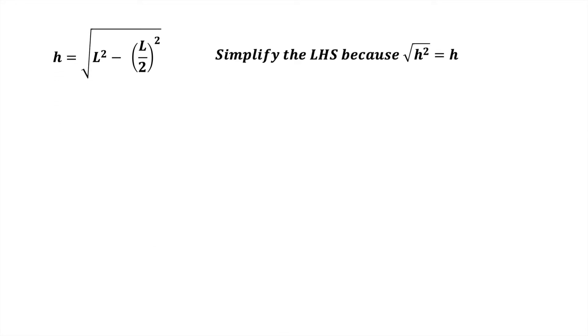We now have an expression for h which is the square root of L squared minus L divided by 2 all squared. We now proceed to simplify this expression in order to substitute it into the familiar triangle area formula: Area equals half times base times height. First, we expand the brackets of the fraction using the laws of indices.